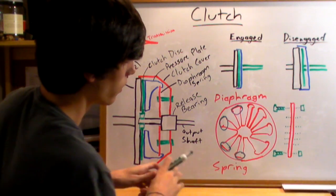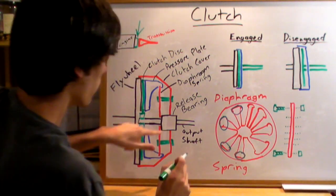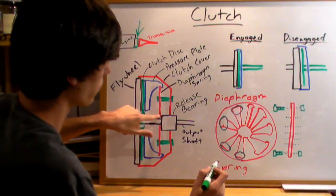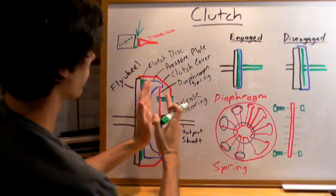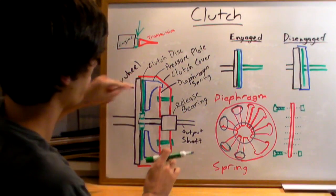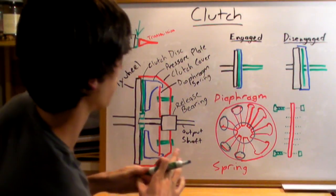And so when you have your release bearing pushed against that diaphragm, it's going to be pushing right here, and as it pushes against that, it's going to force the pressure plate off, and the clutch can then spin freely.